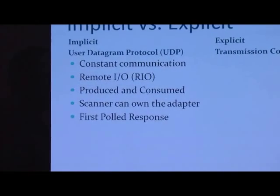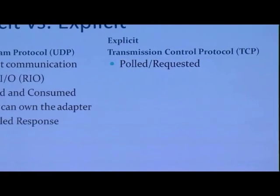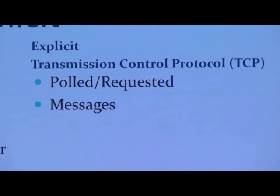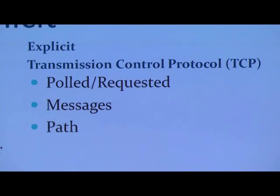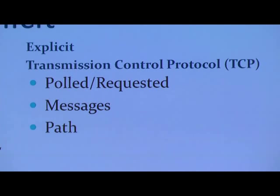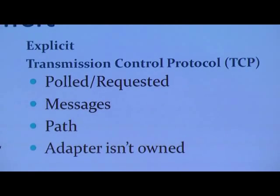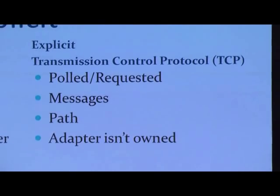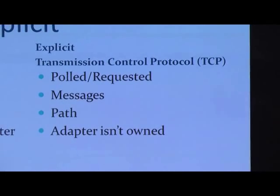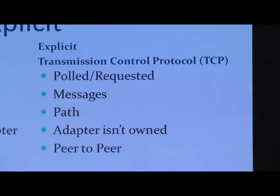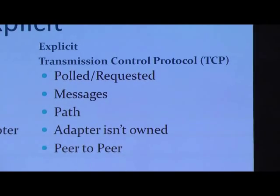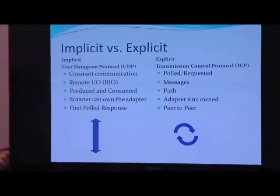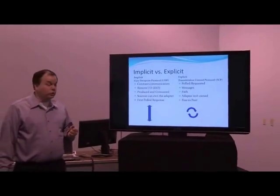With explicit communication, it is a polled or requested communication — the most familiar form being just a read or write message in PLCs. It requires a path and a definition of the object structure, the instances, and the attributes of the object. In this case, the scanner opens a connection, takes the message it needs, and then closes the connection. It is based more on a peer-to-peer methodology. Think of implicit as a pipe permanently connected between two devices, and an explicit message as a softball thrown between the two devices with information.